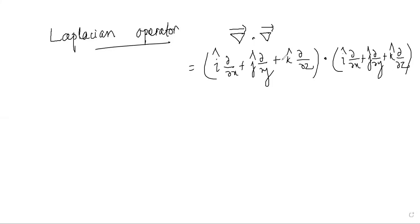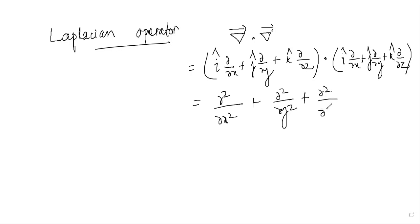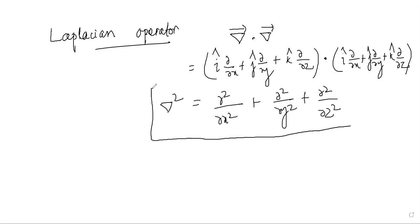In a dot product, only the x, y, and z components exist, so this gives you ∂²/∂x² + ∂²/∂y² + ∂²/∂z². This can be written as ∇² (del squared), and this is known as the Laplacian operator.